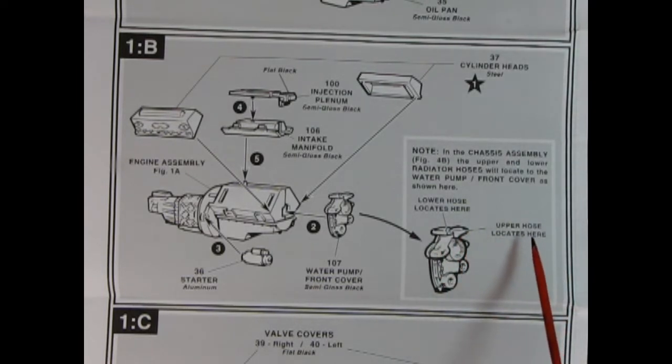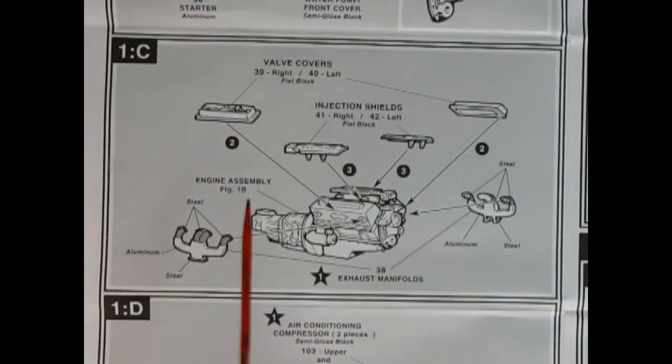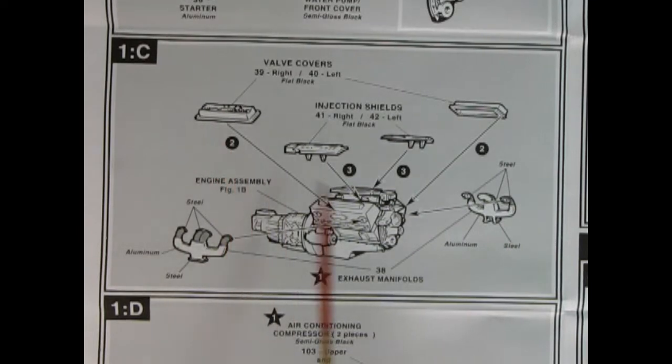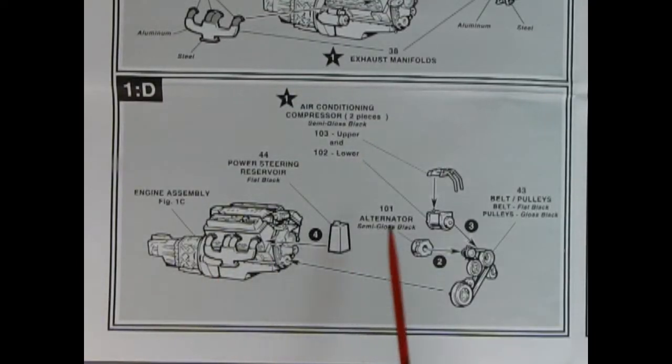So where are we going here? Anyway, there they are. You can check that out. And in panel 1C here, you can add on your nice valve covers, your injector shields and then the left and right exhaust manifolds. In panel 1D, we have our air conditioning compressor unit going together and our belts and pulleys, the alternator and the power steering reservoir. All this will glue onto the front of that engine.